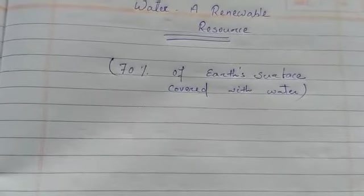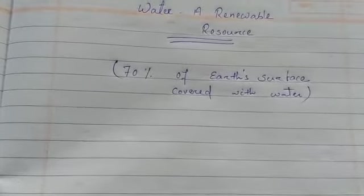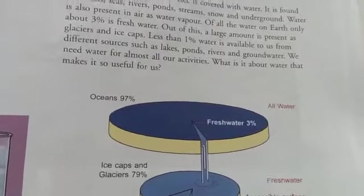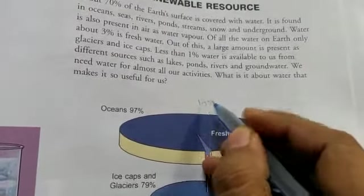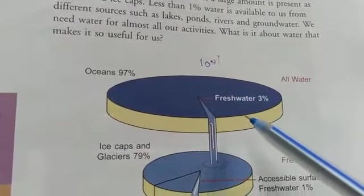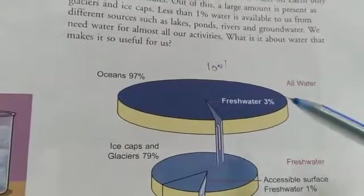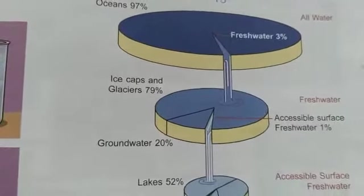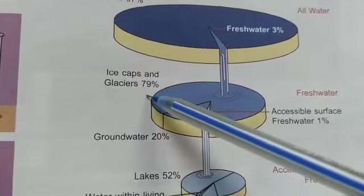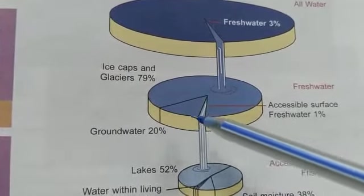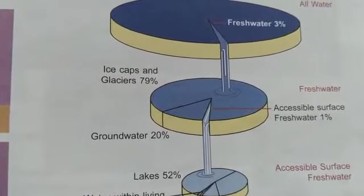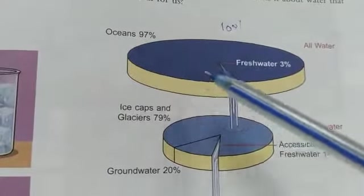If we consider all the water present — in oceans, seas, rivers, ponds, and underground — as 100%, then 97% of it is salt water and only 3% is fresh water. That 97% is found in the oceans, and accessible fresh water is only 3%.